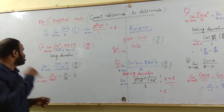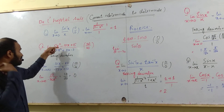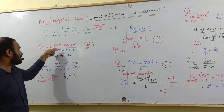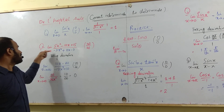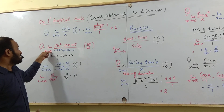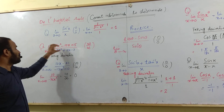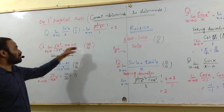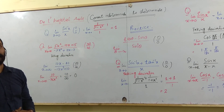Another example: we have two polynomials, one of the second degree and the other one of the fourth degree, and the limit approaches to infinity. You can see here, if I put the limit of both polynomials, we get infinity over infinity form.